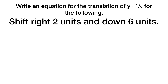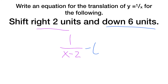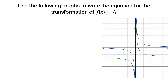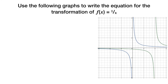This one has two vertical asymptotes, so it becomes 1 over x minus 3 times x plus 4. Multiplying out: 1 over x squared plus x minus 12. For shifting 2 units right and down 6 units, that's 1 over x minus 2, minus 6. Remember, shifting right means minus — it goes the opposite way you'd think.